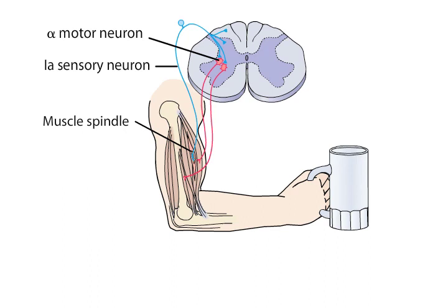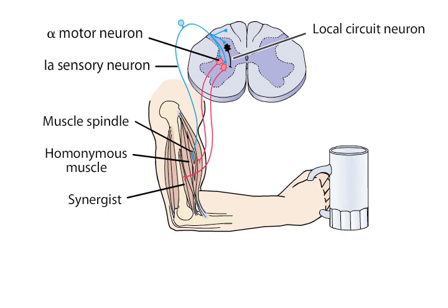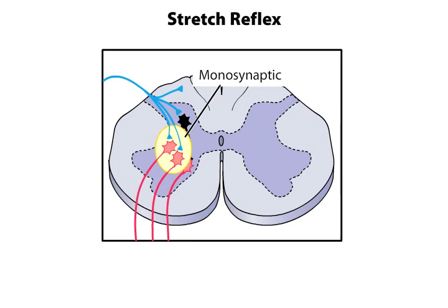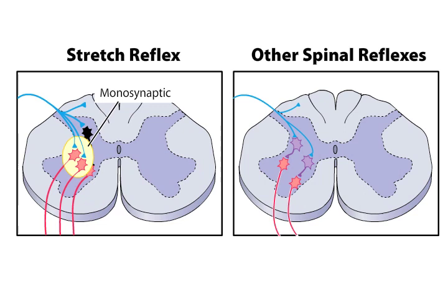The sensory neurons form monosynaptic excitatory connections with the alpha motor neurons in the ventral horn of the spinal cord that innervate the same, homonymous, and synergist muscles. The sensory neurons also innervate local circuit neurons that form inhibitory connections with the alpha motor neurons of antagonistic muscles. The monosynaptic pathway from the spindle to the alpha motor neuron is unusual, as most sensory neurons from the periphery do not contact the lower motor neuron directly, but instead exert their effects through local circuit neurons.